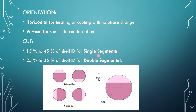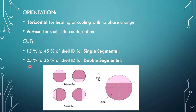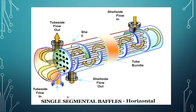Horizontal type baffles are used for heating and cooling purposes with no phase changes, and vertical type baffles are used when shell side condensation takes place. Different baffle cuts are used according to requirements: 15 to 45 percent of the shell inside diameter for single segmental baffles, and 25 to 35 percent of the shell inside diameter for double segmental baffles.